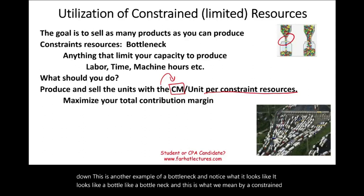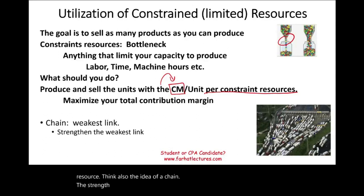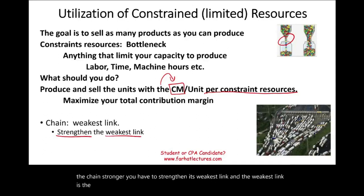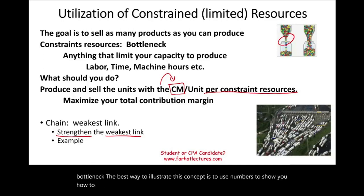Think also of the idea of a chain. The strength of a chain is only as strong as its weakest link. To make the chain stronger, you have to strengthen its weakest link — and the weakest link is the bottleneck. So a company is only as good as their weakest link, which is their bottleneck. The best way to illustrate this concept is to use numbers.